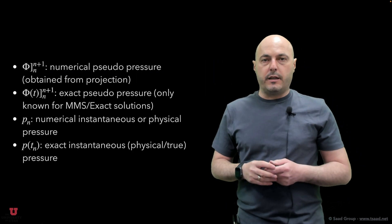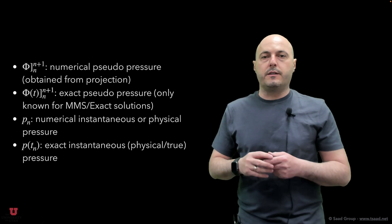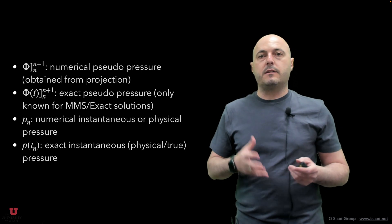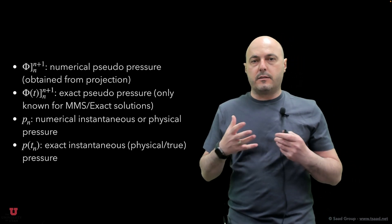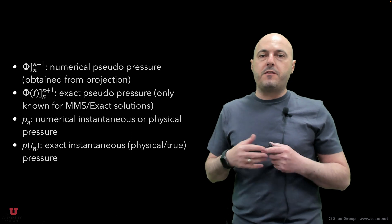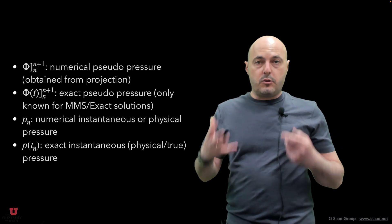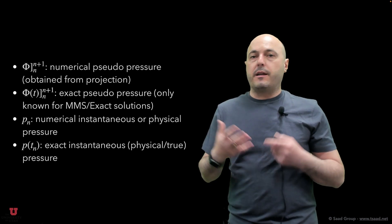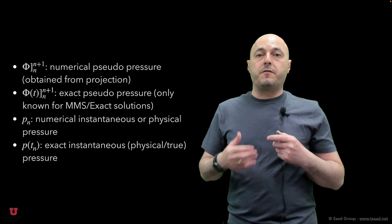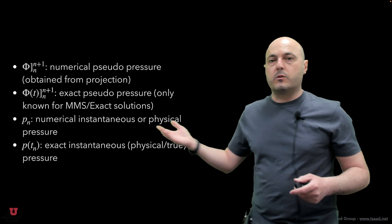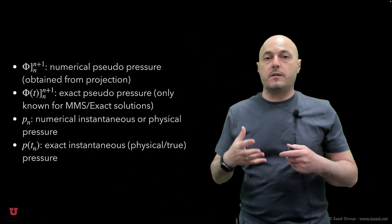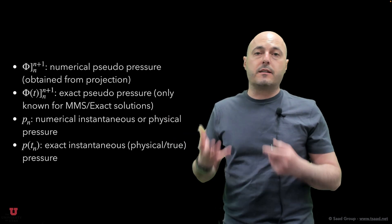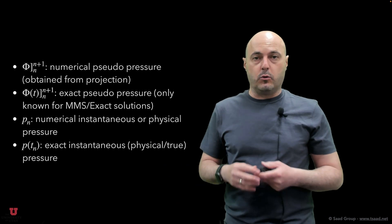I want to introduce some nomenclature to help with the discussion. We refer to all quantities with a parenthesis as exact quantities, and quantities without parentheses as numerical quantities. So for example, phi^{n to n+1} is the numerically obtained pseudo-pressure or average pressure obtained directly from the projection, as opposed to phi(t)^{n to n+1}, which is the exact version of that pseudo-pressure, typically obtained when you have an MMS or exact solution.